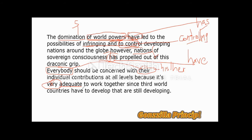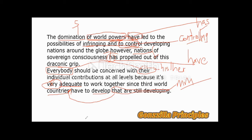Final part of the paragraph: 'To work together since third world countries have to develop that are still developing.' The phrase 'that are still developing' is a modifier, and it's unclear whether it modifies 'develop' or 'countries' — this creates a misplaced modifier. To fix it, bring the modifier directly after 'countries,' the noun it modifies. Corrected: 'since third world countries that are still developing have to develop together.' This avoids ambiguity and properly positions the modifier after its noun.